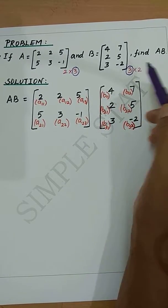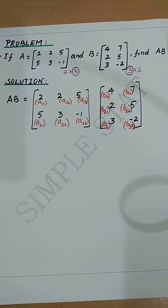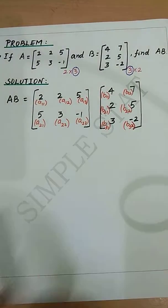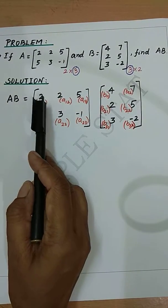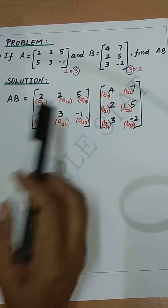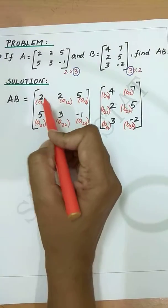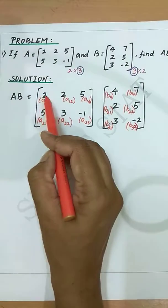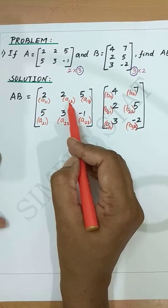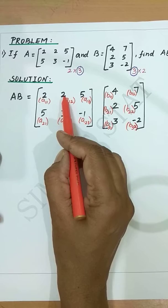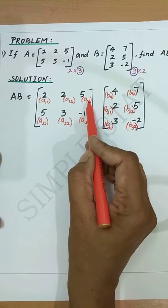Let's now proceed with the solution. First, write A×B — matrix A and matrix B. The notation denotes the elements: A11 is the element in the first row first column, A12 denotes the element in the first row second column, A13 denotes the element in the first row third column.